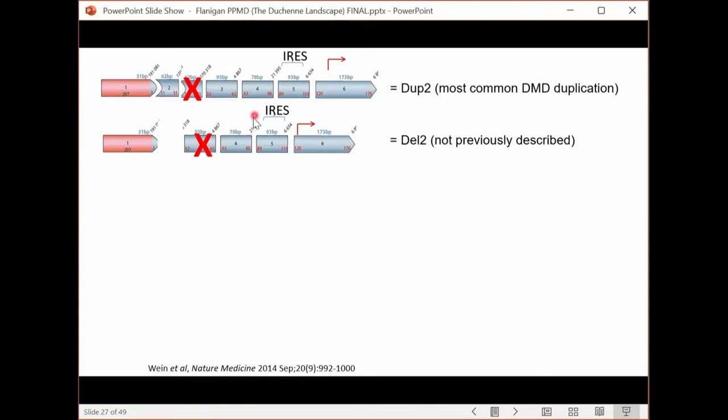In our paper published in 2014, we pointed out that IRES existed in exon 5, and the translational initiation site existed in exon 6. In patients, both patients with exon 2 duplications and patients with exon 2 deletions, both of those patients had a frame shift of the reading frame. Duplication 2 patients look like DMD. In fact, they're the most common DMD duplication. They account for about 10% of all duplications. In contrast, patients with deletions of exon 2 had not been described at the time of our paper.